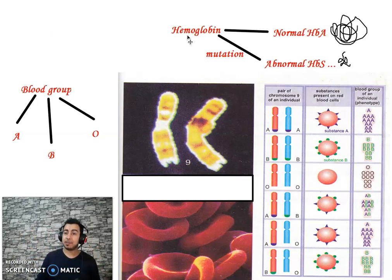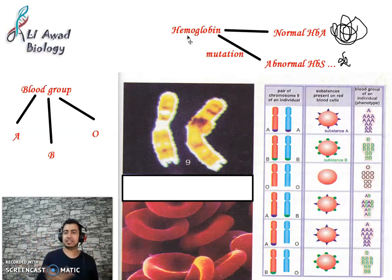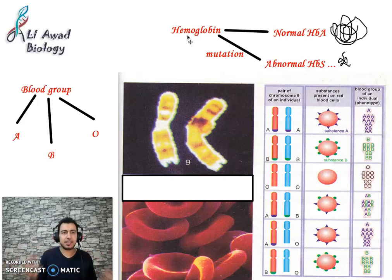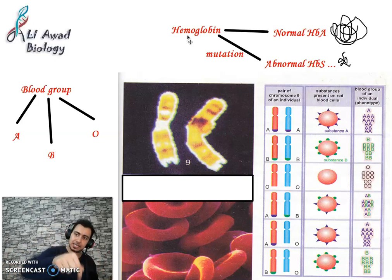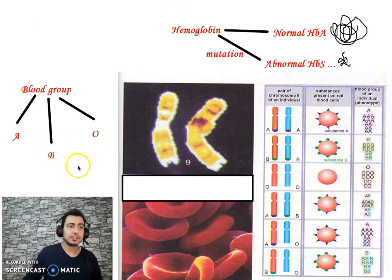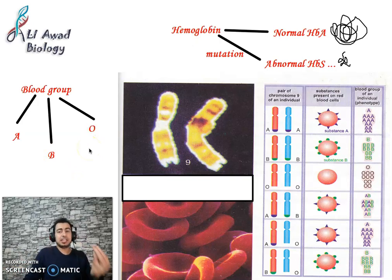The gene of the blood group has many alleles: allele A, allele B, and allele O. These alleles arise due to mutation — a mutation in the gene creates a new form, a new phenotype.